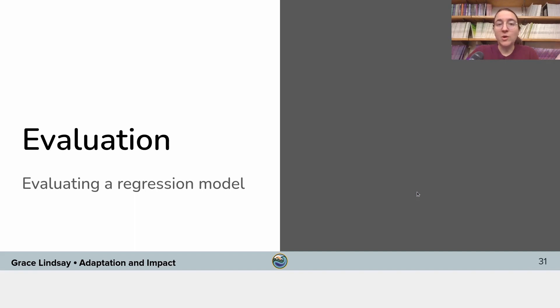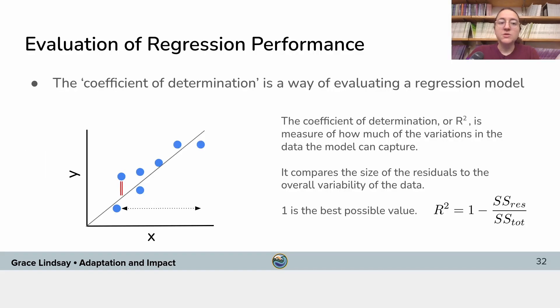So once you train your model, you want to know how well it's performing. Is it actually doing a good job of predicting the temperature in 2050 based on all the inputs that we give to the model? So how you evaluate a regression model is usually with the coefficient of determination. This is also known as r squared. And basically, it is a measure of how big the errors in the model are compared to how variable the data itself is.